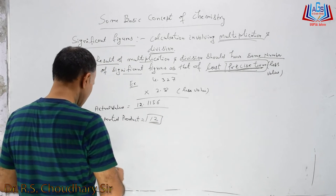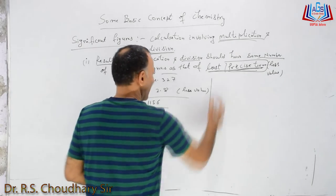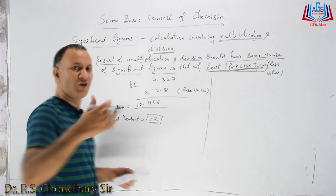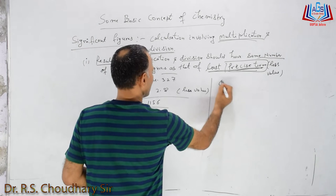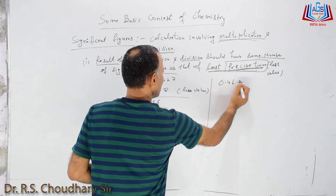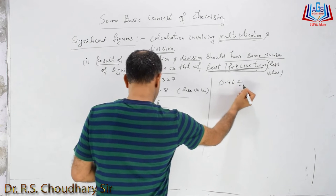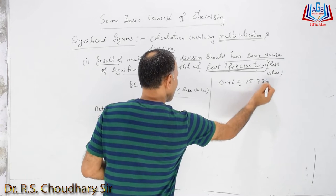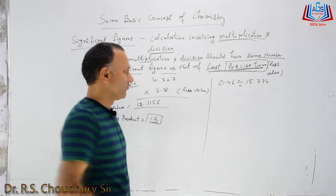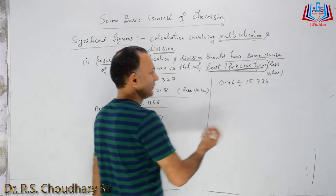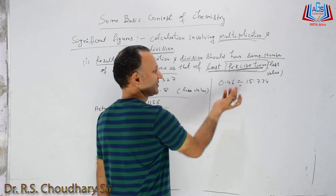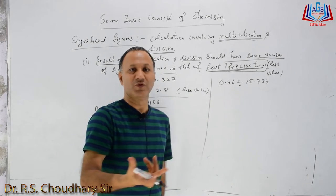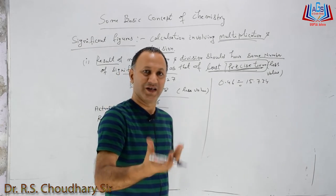I am taking another example of division. It is given: 0.46 divided by 15.734. Which has the least precise term — which value is smaller? Point four six (0.46) is the lesser value.